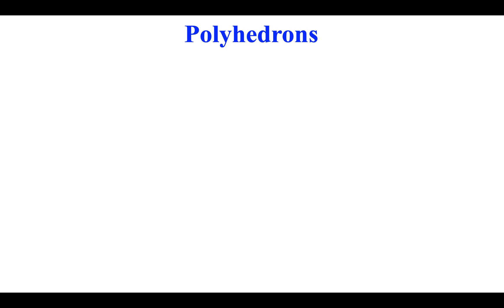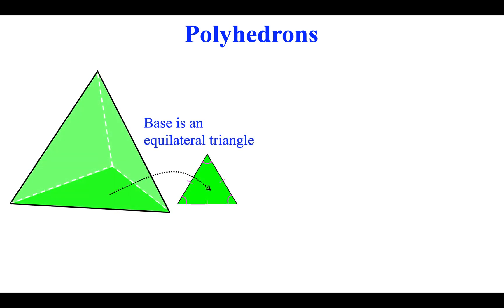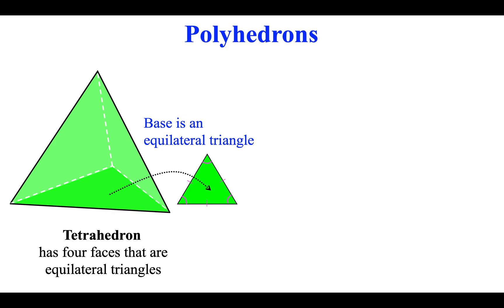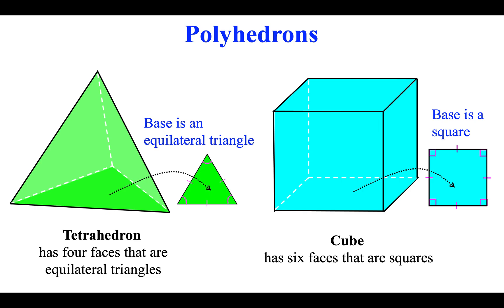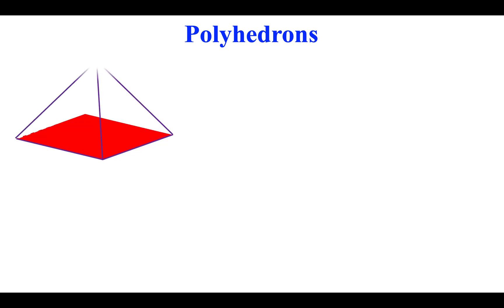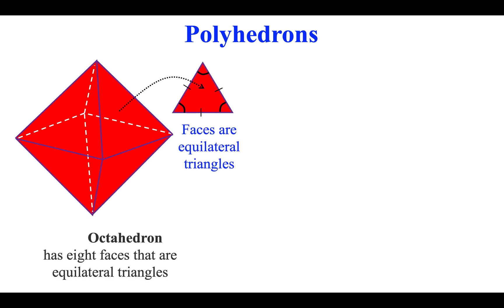Polyhedron. Tetrahedron has four faces that are equilateral triangles. Cube has six faces that are squares. Octahedron has eight faces that are equilateral triangles.